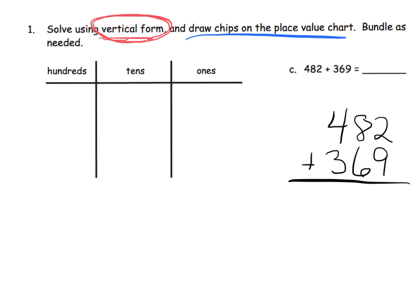So do let your students differentiate themselves, whether they do the algorithm first or if they do the place value chart first. So we're going to begin by filling in that place value chart, and we're going to start with drawing 482. So we're going to do 1, 2, 3, 4 hundreds, 1, 2, 3, 4, 5, 6, 7, 8 tens, and 2, 1. So there's our model for 482.